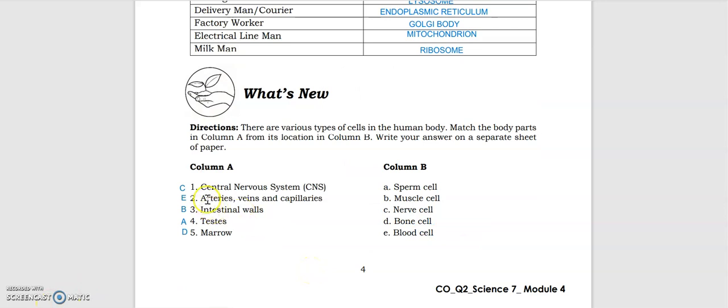Then we have the various types of cells in the human body, starting with the central nervous system, that's the nerve cell. Arteries, veins and capillaries, the blood cell. Then Christina walls, muscle cell. Testes, sperm cell. Marrow, that's bone cell.